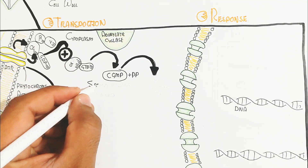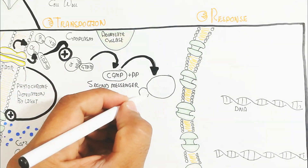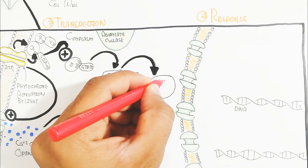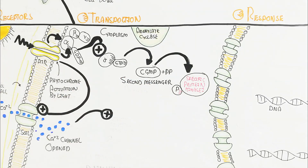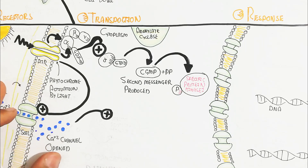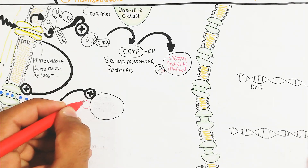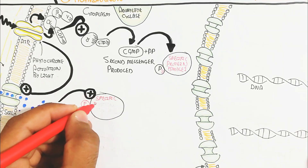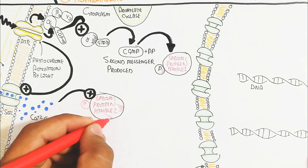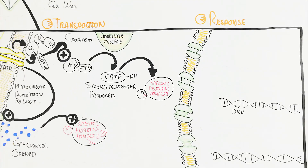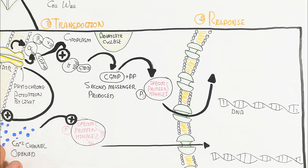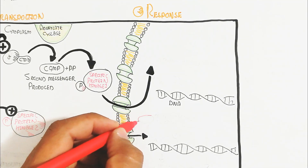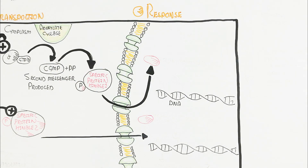The second messenger cyclic GMP activates specific protein kinase one, initiating a cascade of phosphorylation events. Similarly, from the soil signal, calcium entering the cell activates specific protein kinase two. This phosphorylation cascade moves into the nucleus through the nuclear pore.